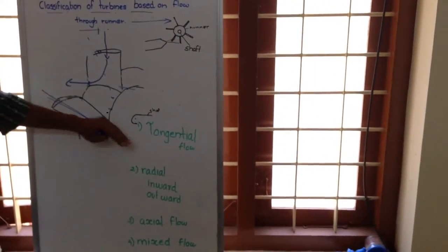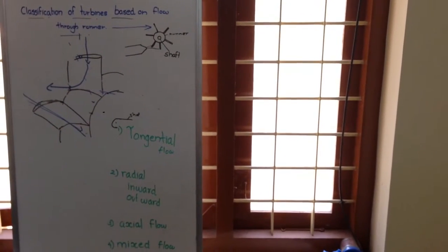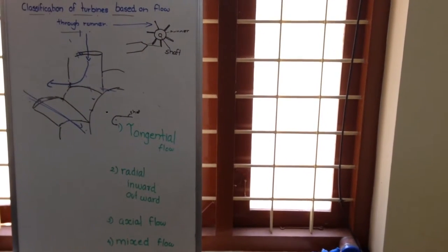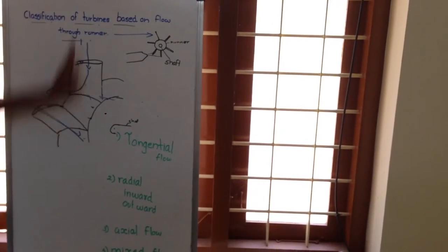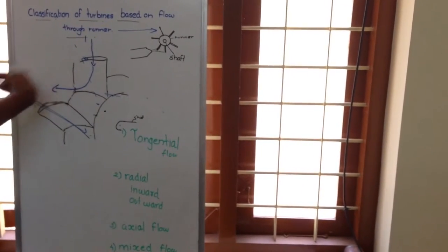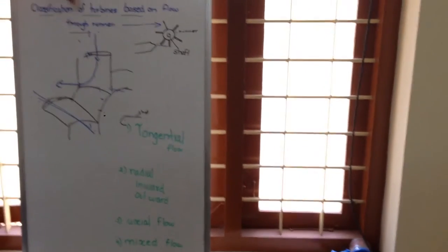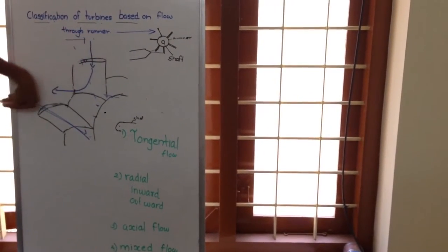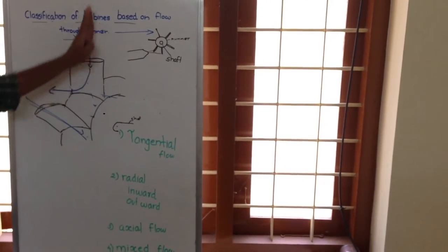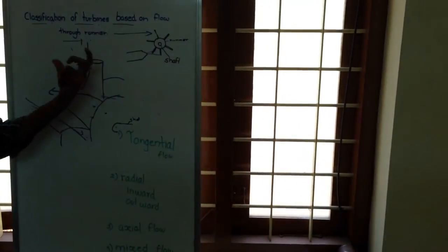Based on flow, turbines are classified as: tangential flow, where flow is tangential to the runner; radial flow, where water moves radially inward or outward; axial flow, where water goes parallel to the shaft; and mixed flow, where water enters radially and exits axially, or enters axially and exits radially — mainly because of the blade geometry.